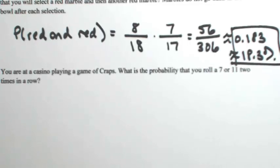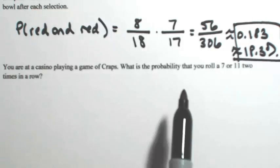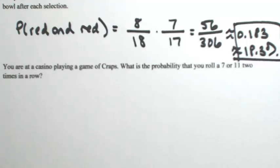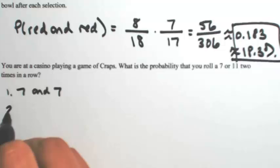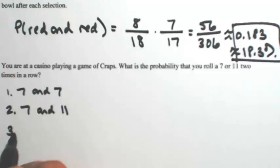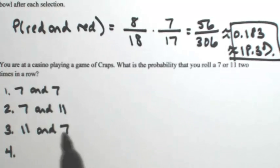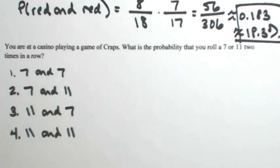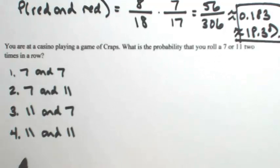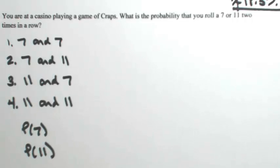Let's look at one more example. Let's say you are at a casino playing a game of craps. What is the probability that you roll a 7 or 11 two times in a row? There are actually four ways this can happen: you get a 7 then a 7, a 7 then an 11, an 11 then a 7, or an 11 then an 11. In all these cases, you're getting a 7 or 11 two times in a row. These are going to be independent rolls because one roll has nothing to do with the next.